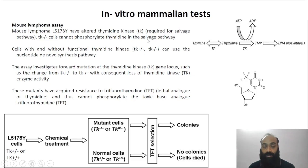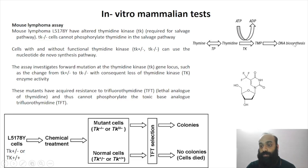The salvage pathway uses existing precursors of nucleotides and converts them into usable nucleotides. For example, thymine taken up from the diet is converted into thymidine, which is then converted into TMP — thymidine monophosphate — by the enzyme TK, and TMP is then utilized for DNA biosynthesis.